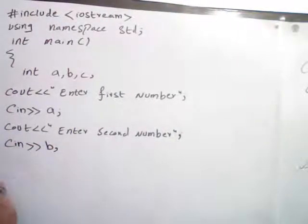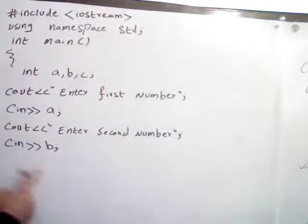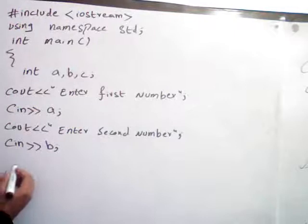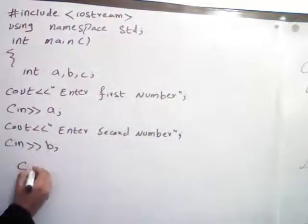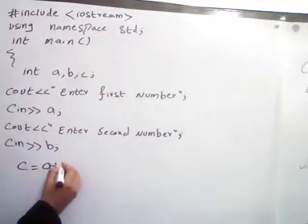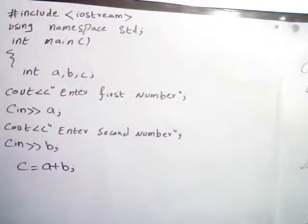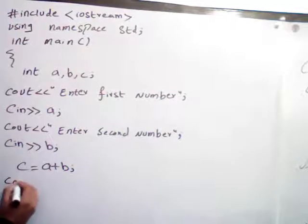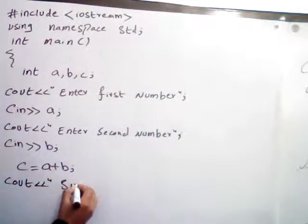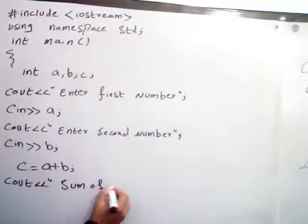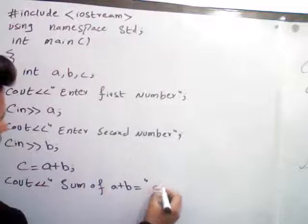And return 0. And close. So for example, user gives an input like 5 and the second message is printed out. Enter the second number. User gives a 10.